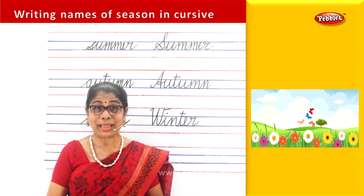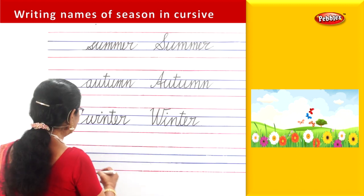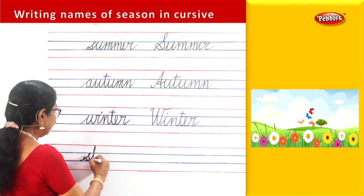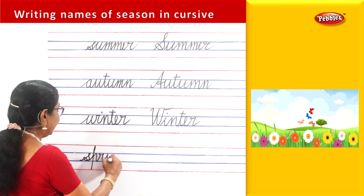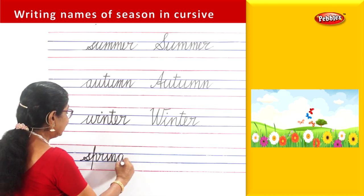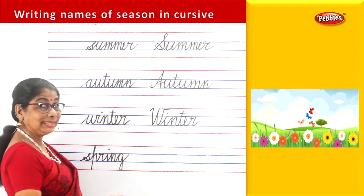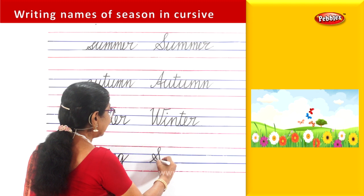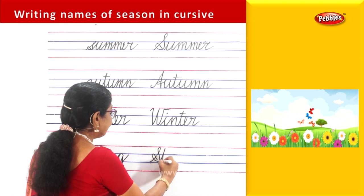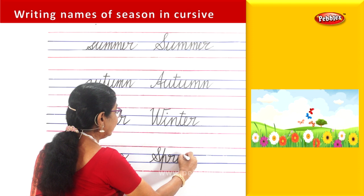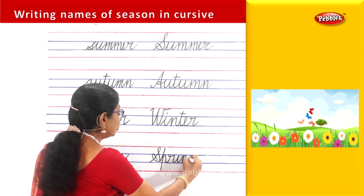Springtime — happy time! Let us write: spring — S-P-R-I-N-G. Springtime. Let us write with capital S: S-P-R-I-N-G.